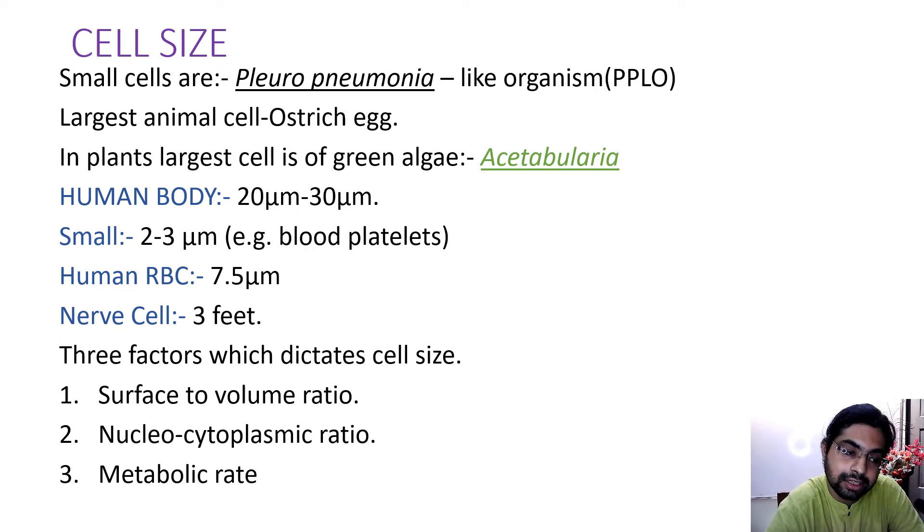Now cell size. Small cells are pleuro pneumonia-like organisms, PPLO. So this is a general GK question: give an example of a small cell - it's pleuro pneumonia PPLO-like organism. And the largest animal cell is the ostrich egg. You see the size matters. The PPLO, that is pleuro pneumonia-like organisms, they have small cells, whereas ostrich, their egg cells are the largest to be considered.